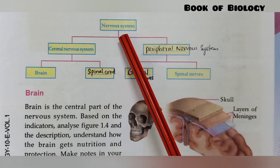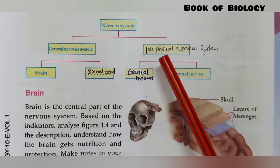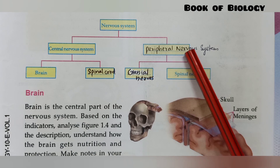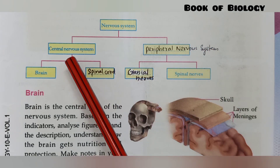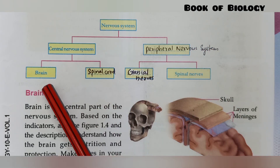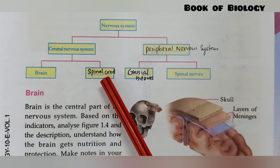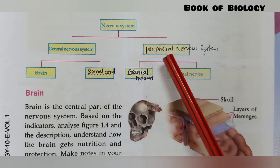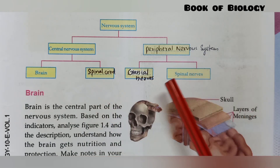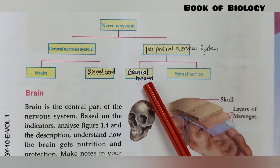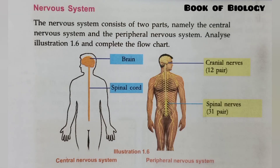There are two parts in the nervous system: the central nervous system and the peripheral nervous system. The central nervous system includes two organs — the brain and the spinal cord. The peripheral nervous system includes two types of nerves — cranial nerves and spinal nerves.